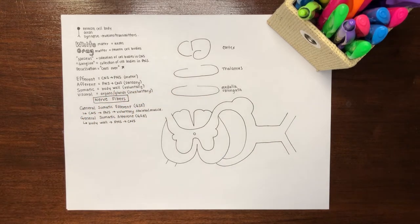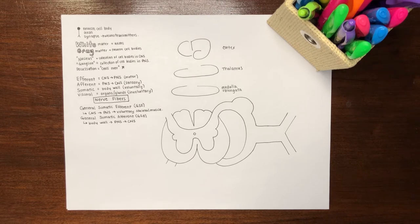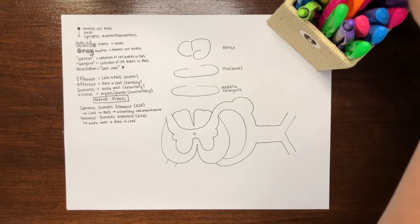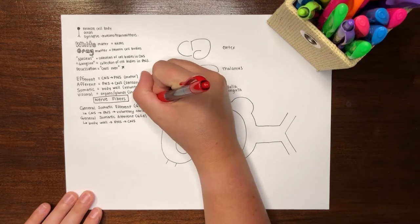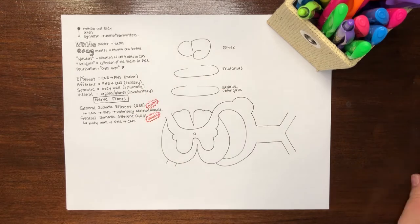As a side note, use of the word general simply differentiates these neuron fibers from special nerve fibers that are involved in our special senses, like vision, hearing, and smell. Visceral nerve fibers will be discussed and diagrammed in a separate video. Let's talk about the nerve systems that we will be exploring in this video.